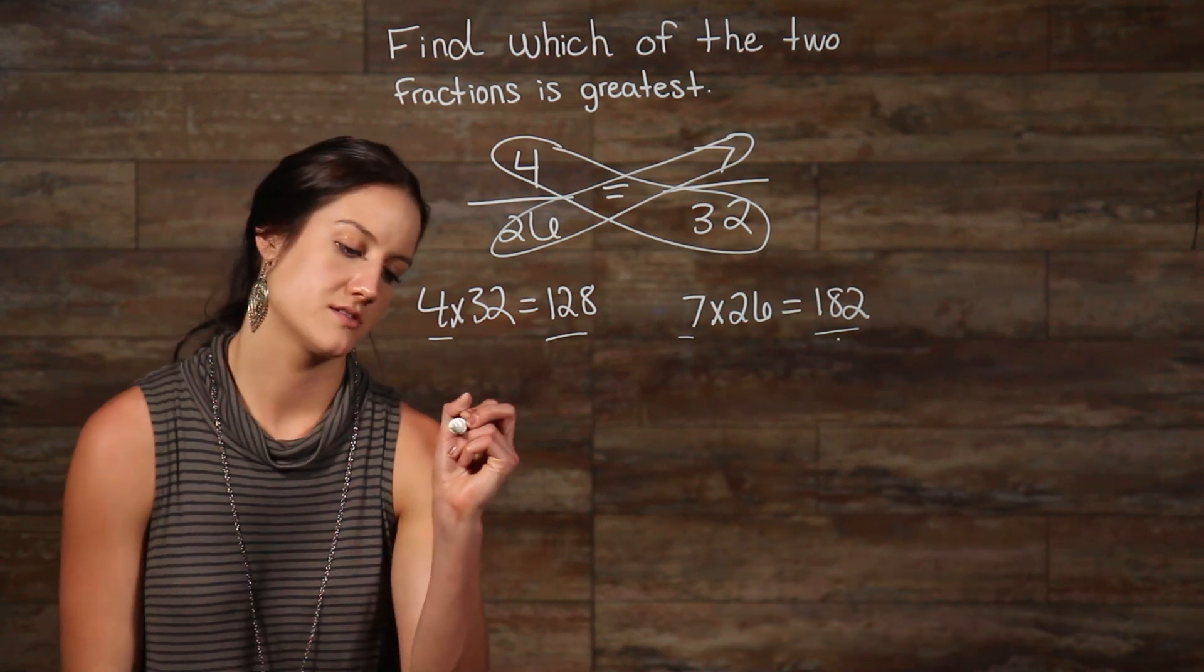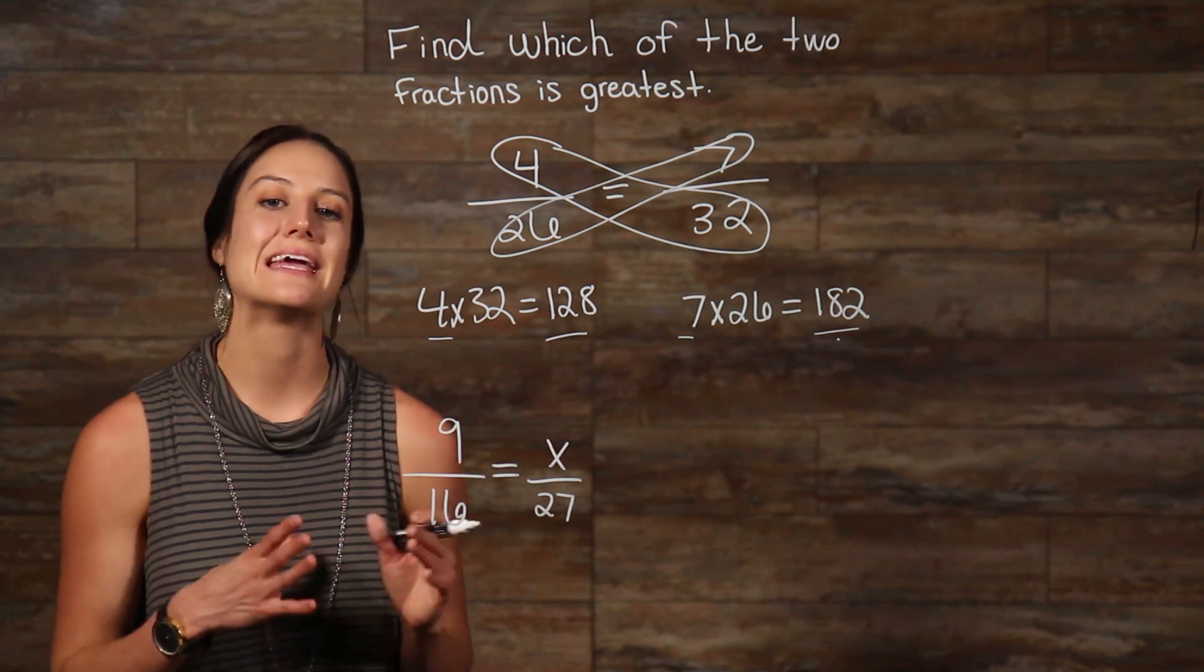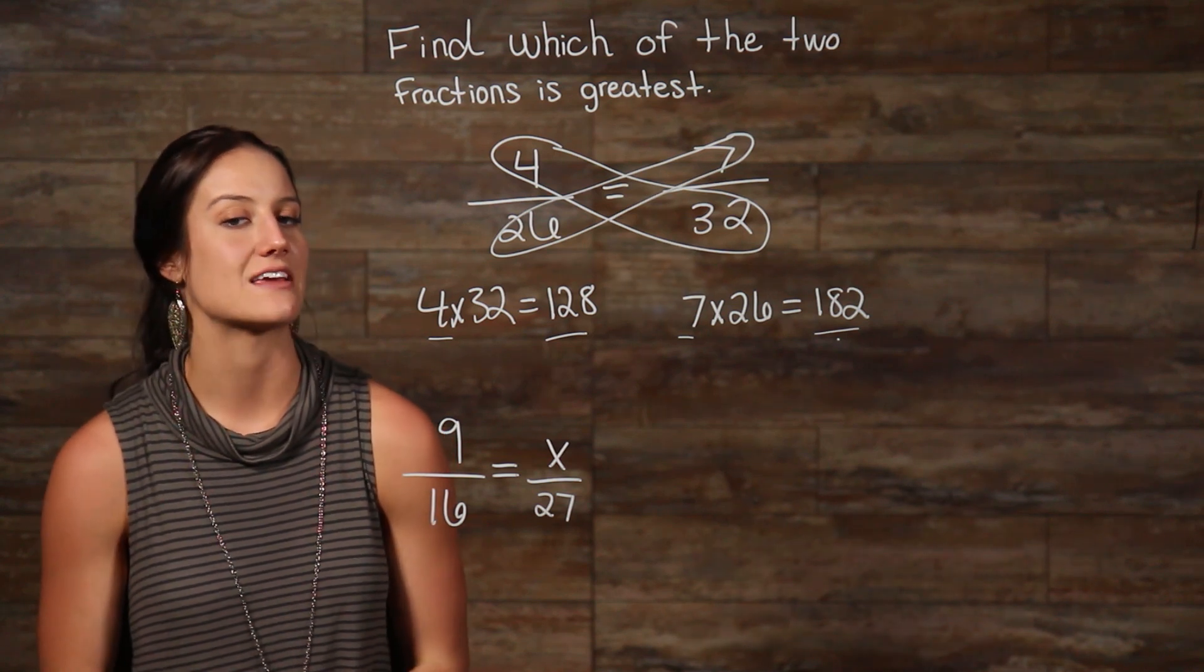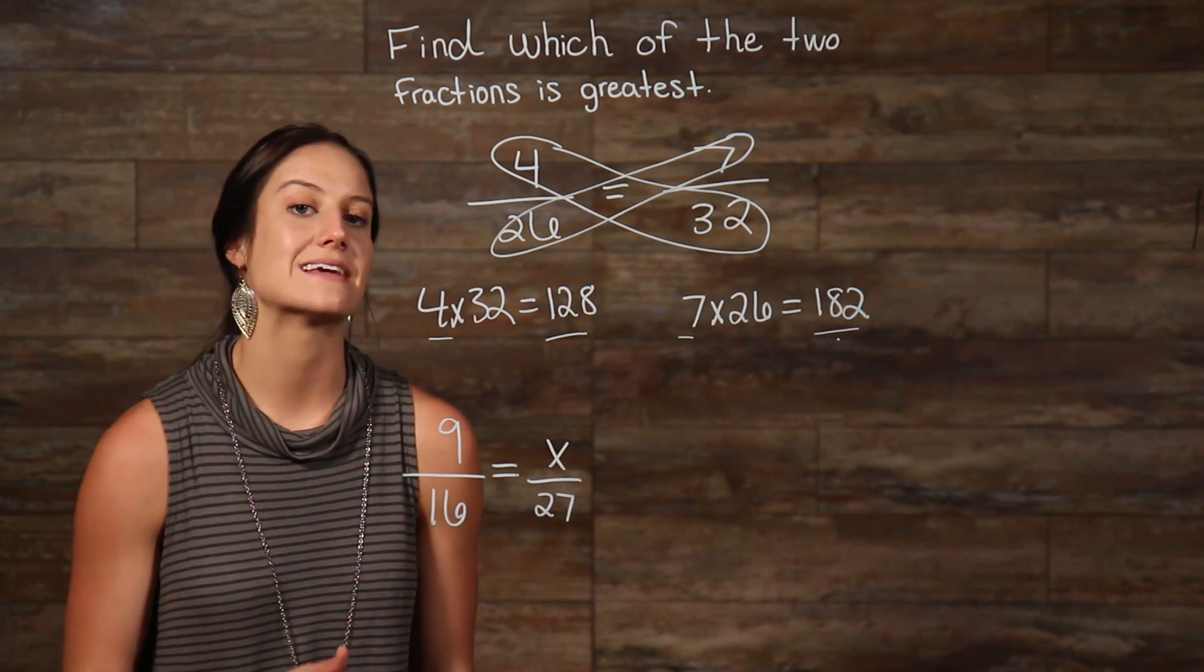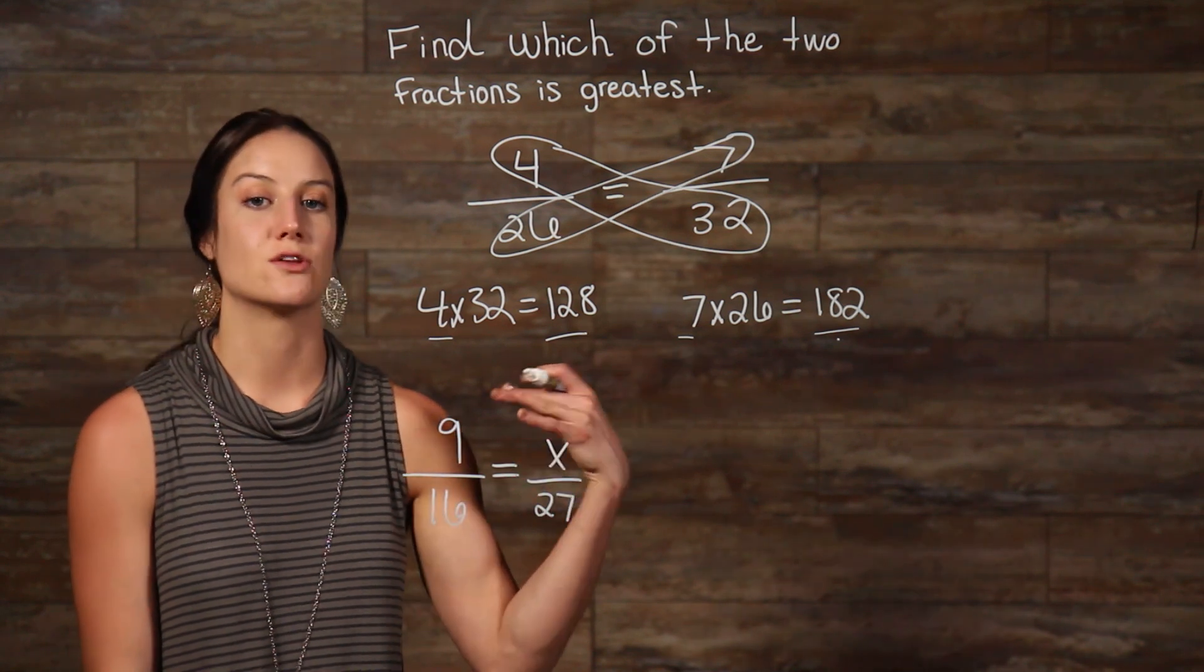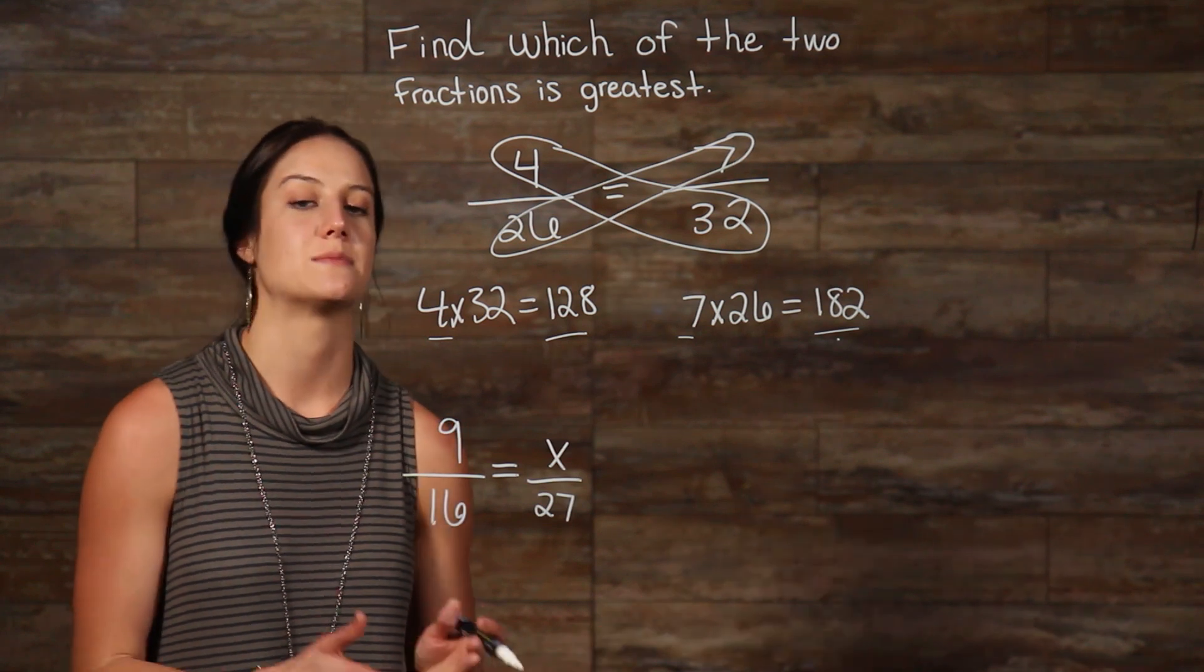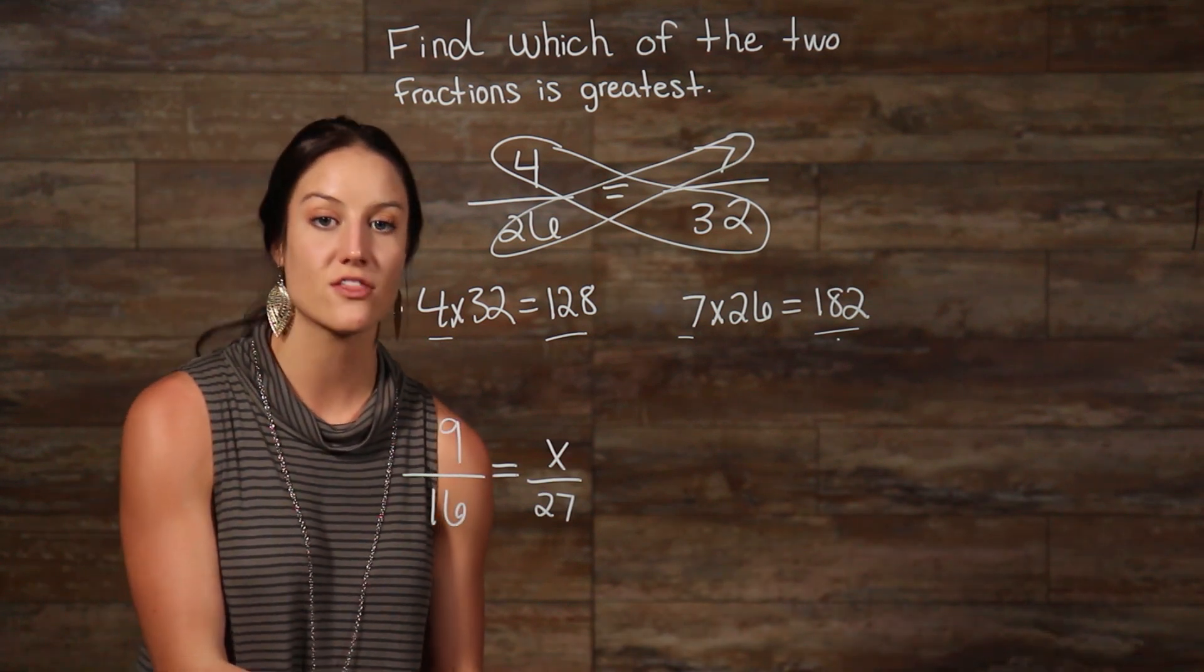Let's say we have two fractions. We can cross multiply any time we have a fraction that is set equal to another fraction. Now, to cross multiply, we do the exact same thing that we did in our last example. We take the numerator of one side and multiply it times the denominator of the other side, and do the same thing for the numerator of the other side.